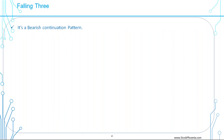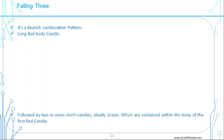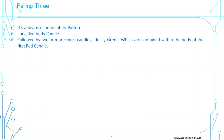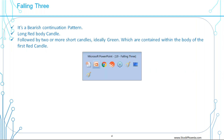The Falling Three is a bearish continuation pattern. That means when a market falls, it tries to retrace or reverse, but could not make a reversal and again goes further down. In a bearish trend, it will take a small retracement and again there will be a downtrend. The pattern is identified by a long red body candle followed by two or more short candles — ideally green — which are contained within the body of the first red candle, somewhat like an inside candle.